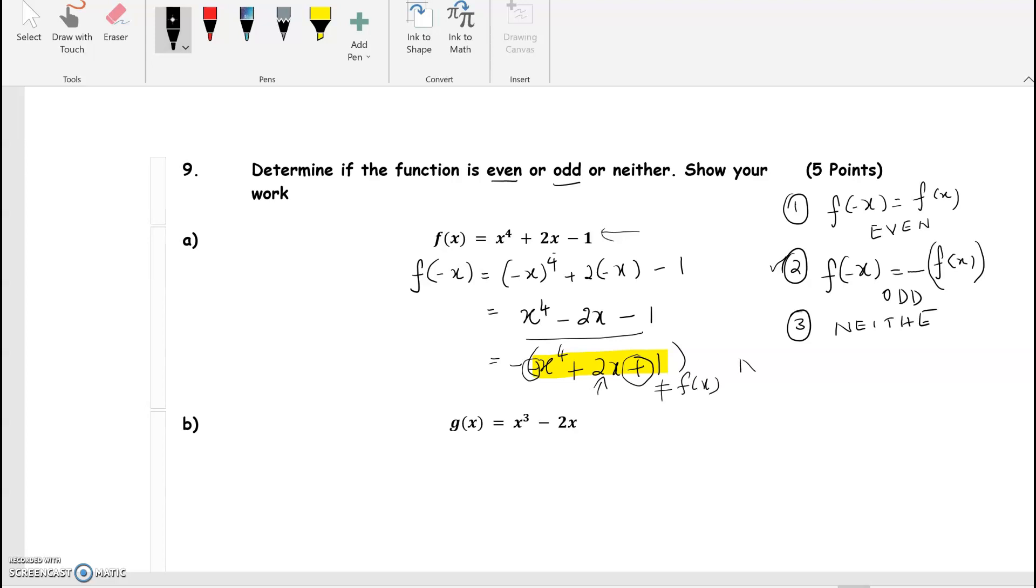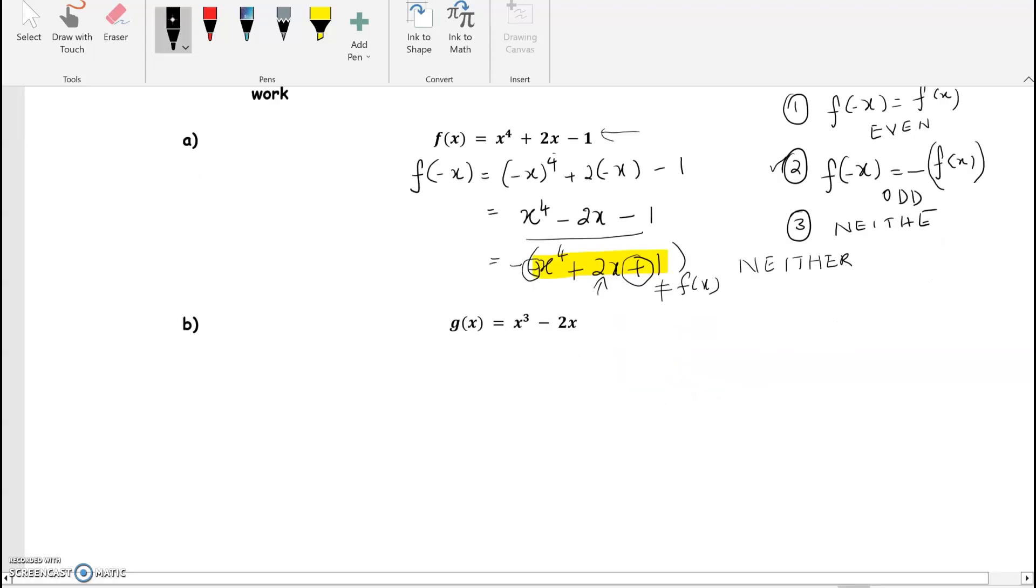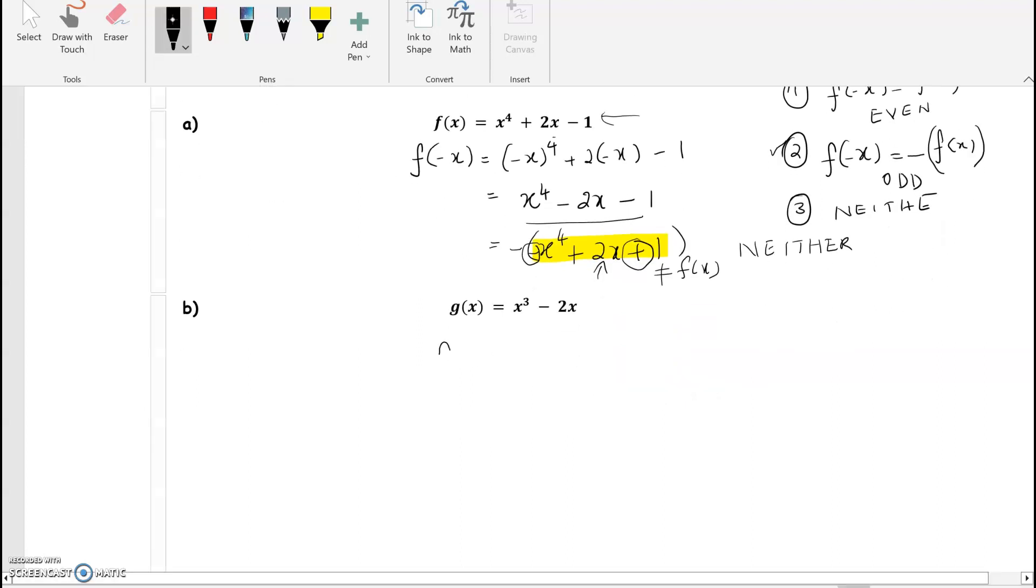So g of x is equal to x cubed minus 2x. g of negative x is equal to negative x the whole cubed minus 2 times negative x.